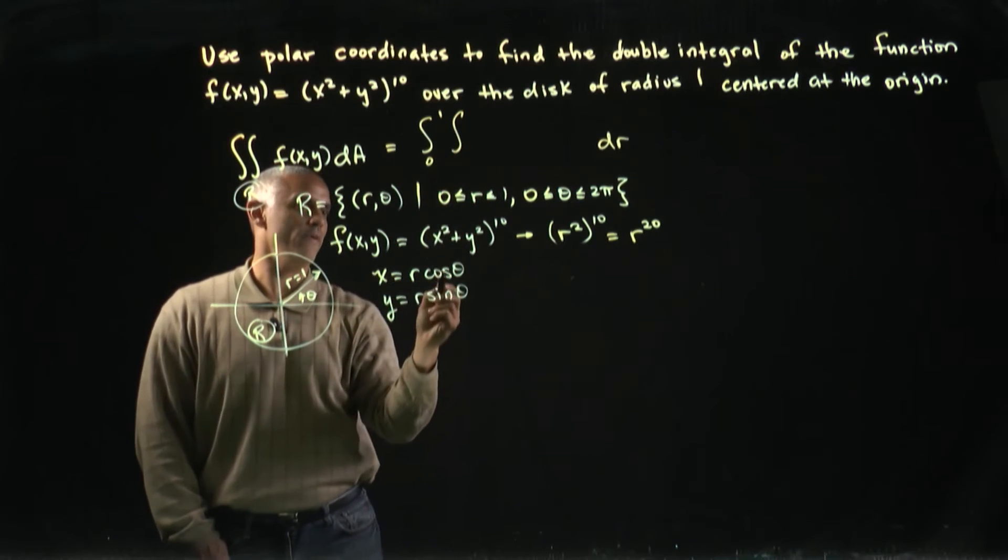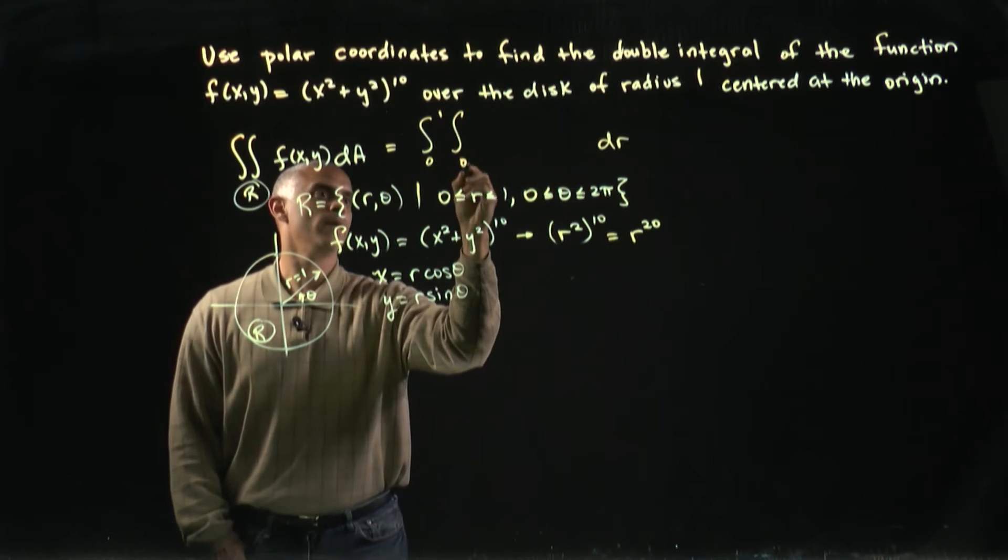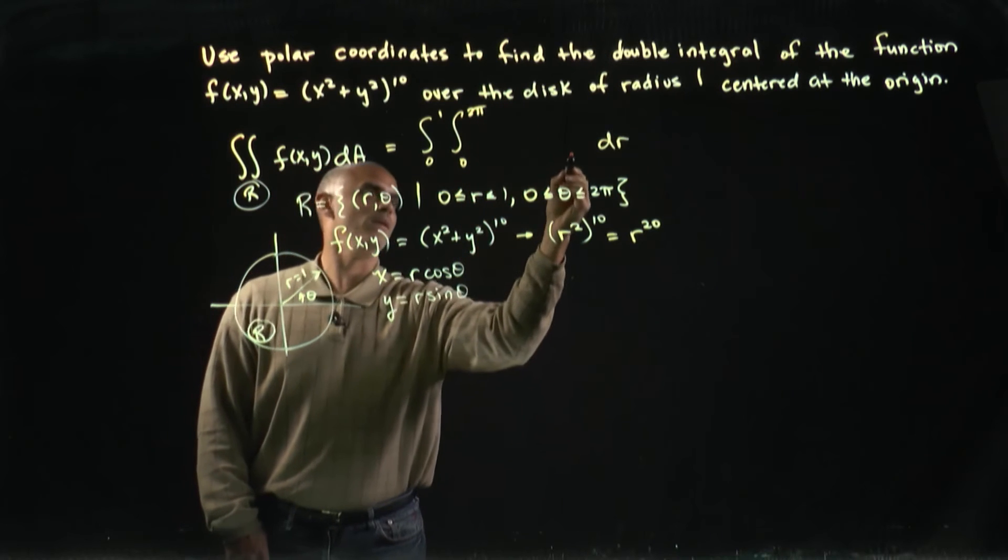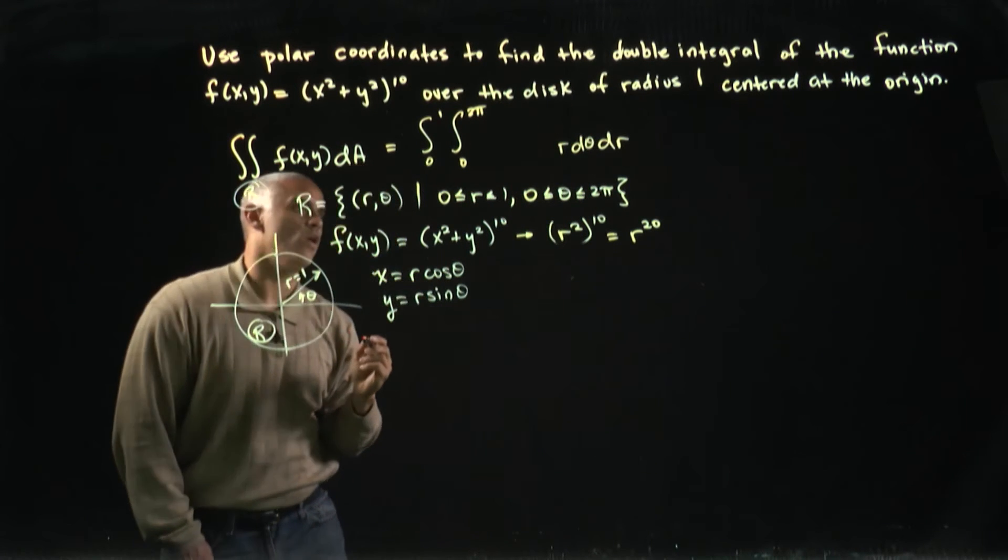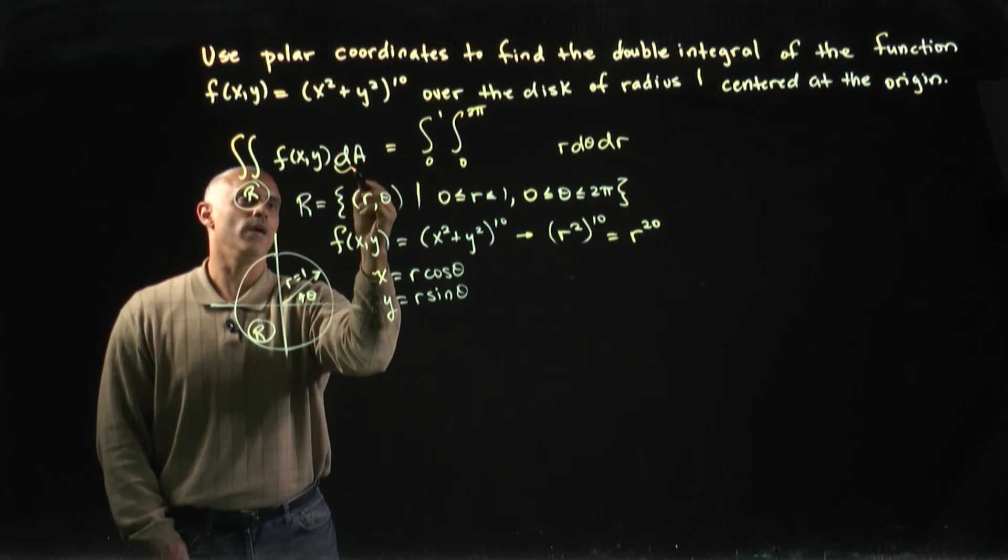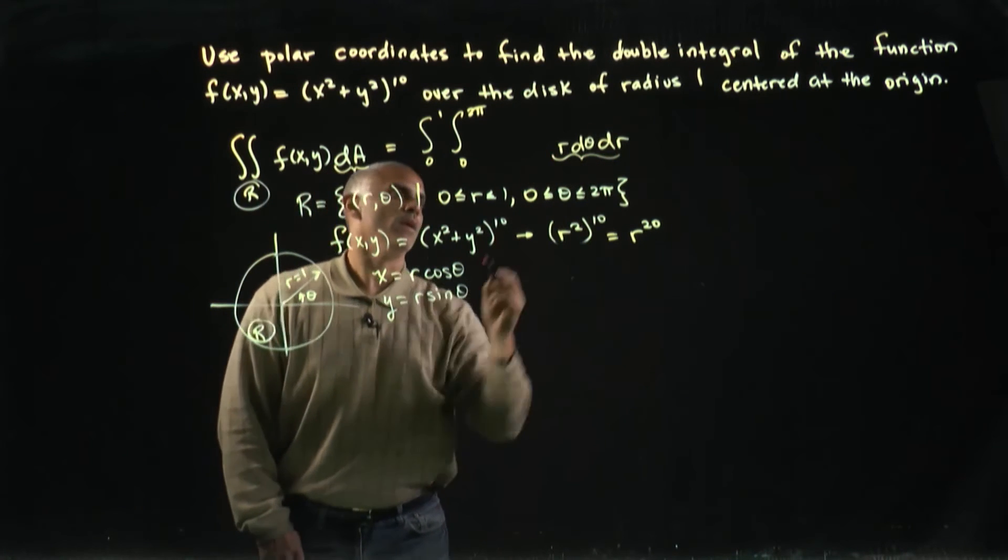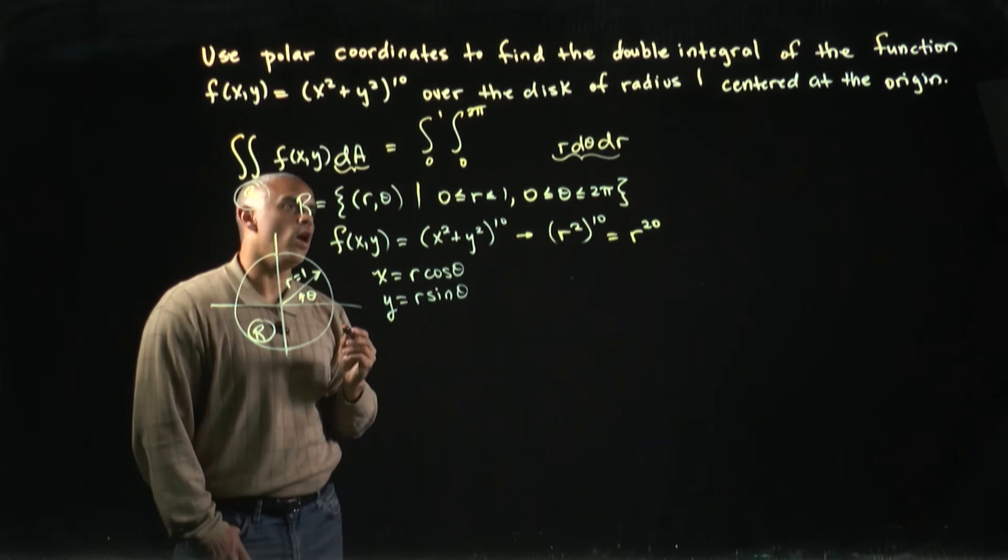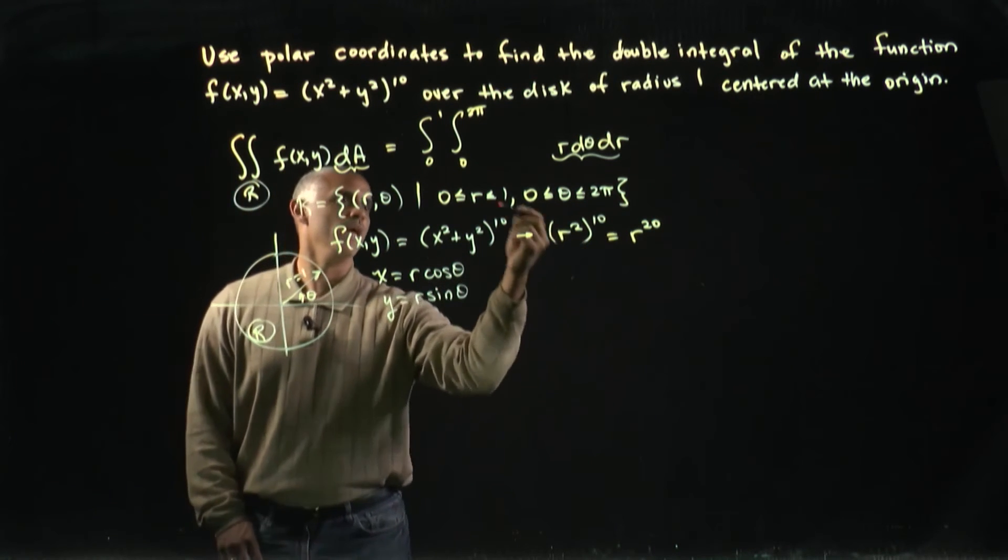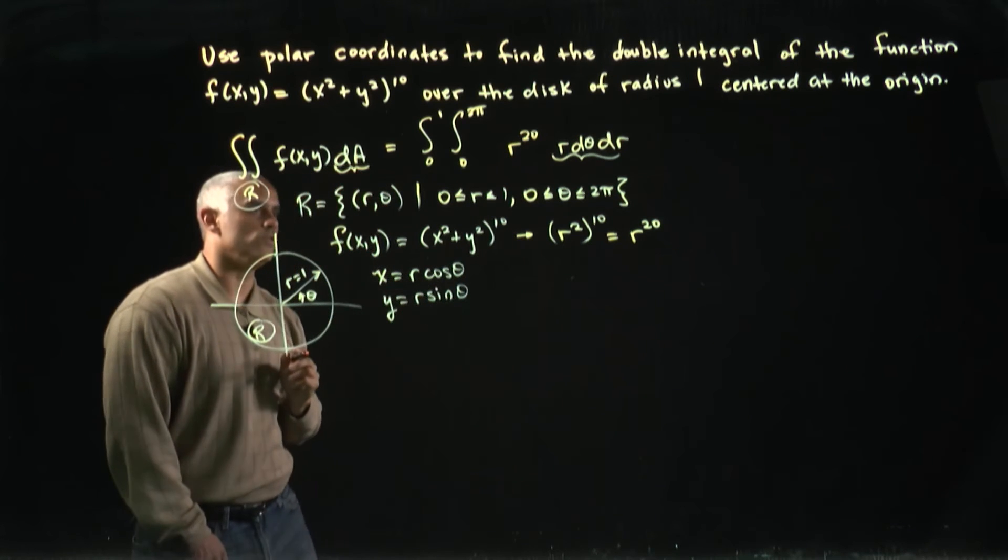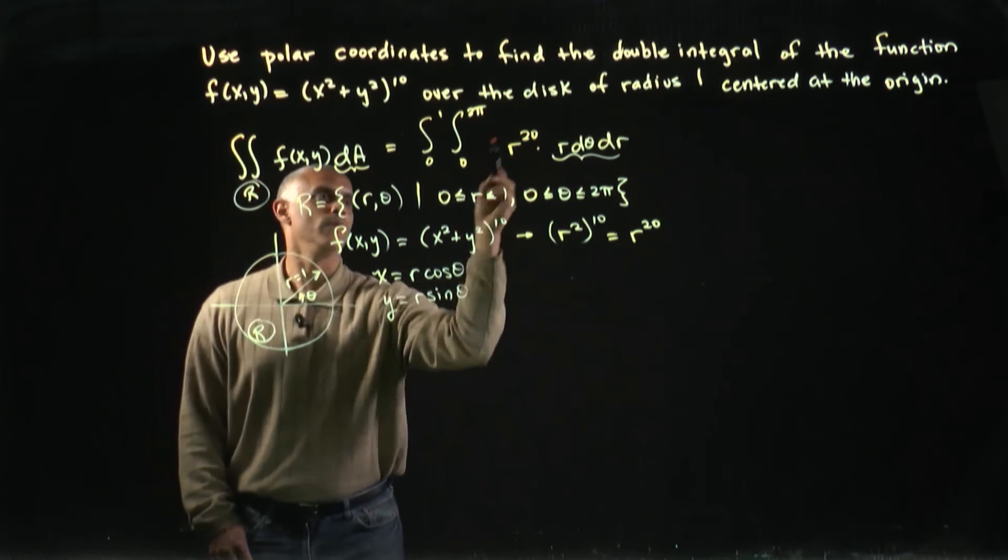Theta is going to vary from zero to 2π. I'll put my dθ on the inside and not forget about my extra factor r on my differential area element. So it's r dr dθ or r dθ dr depending on type. And my function simplified down to r^20.